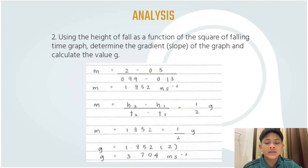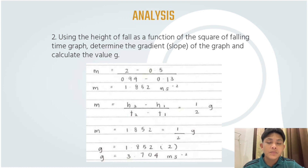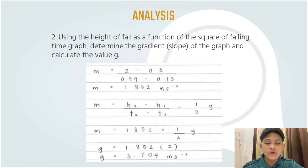Next, we find the value of g using the formula: (y2 - y1) / (x2 - x1) = (1/2)g. Substituting 1.852 = (1/2)g, we calculate and obtain the value of g = 3.704 m/s².